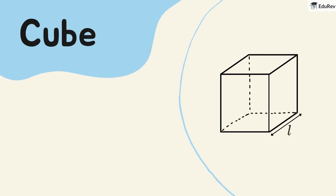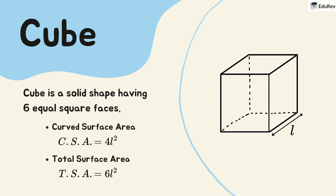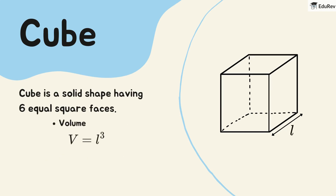Let's talk about the cube. A cube is a solid shape with six equal square faces. Its curved surface area is four times the square of its length. The total surface area is six times the square of its length. The volume of a cube is the cube of its length.